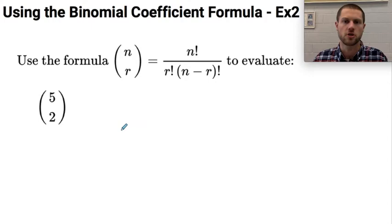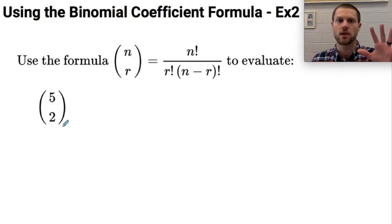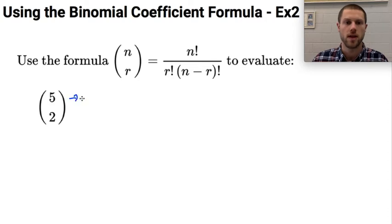So let's use that formula. Let's practice some basic examples. Let's use the formula for n choose r to evaluate 5 choose 2. And the reason why we say 5 choose 2 is if I have 5 things and I want to choose 2 of them, this is the number of ways that you can do this. So this means that n equals 5 and r equals 2. Let's just plug it into the formula.